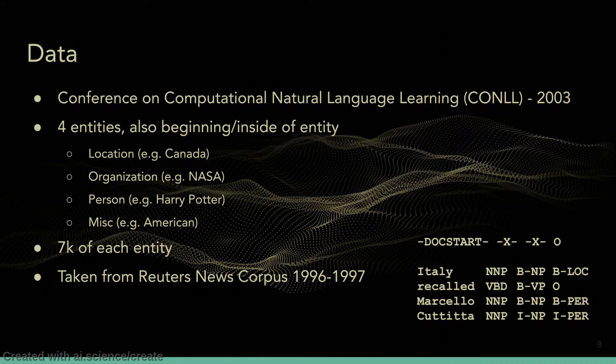An example from the dataset is in the bottom right corner. The data are arranged in four columns; the first and fourth are the important ones. The far left has the tokens, and the far right has the tagged entities. From top to bottom, there is a beginning of location entity, a non-entity, a beginning of person entity, and an inside of person entity.